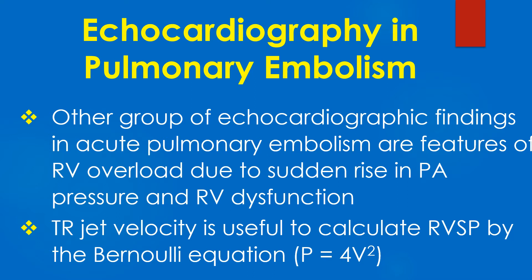Tricuspid regurgitation jet velocity is useful to calculate the right ventricular systolic pressure by the Bernoulli equation: P equals 4V squared.